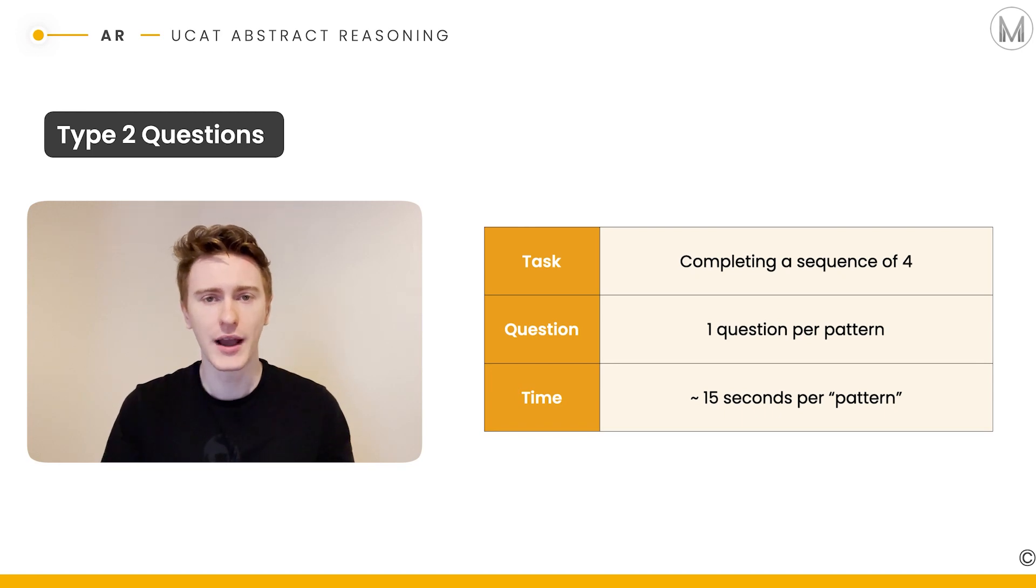Let's move on to type two questions. Type two questions are all about a sequence of shapes and we're asked what is the next shape or what is the next example in this sequence. You only get one pattern per question. In other words, you've got 15 seconds to answer that sequence and then the next question is completely different. It doesn't follow any sort of continuation.